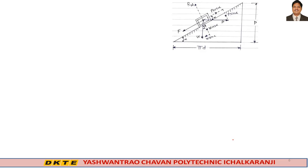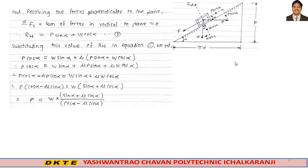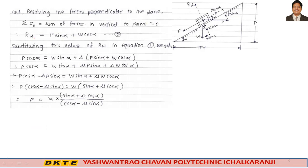Resolving forces perpendicular to the plane — summation of vertical forces equals zero: Rn (upward) equals P·sin alpha plus W·cos alpha (downward). This gives the normal reaction value Rn.